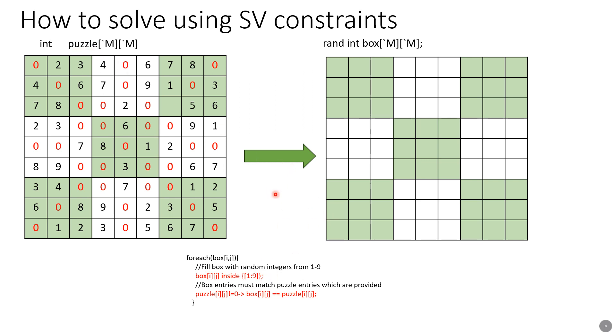We call that random two-dimensional matrix 'box' and the constants that were provided to us we call matrix 'puzzle'. Then we start writing constraints on how to constrain these elements using whatever is provided. We write two constraints. The first constraint says box[i][j] inside 1 to 9, meaning we're going to fill each of these small boxes using numbers 1 to 9. The next says puzzle[i][j] not equal to zero implies box[i][j] equals puzzle[i][j]. That means if any element is not zero, the numbers that have been provided in the puzzle matrix just need to be copied over to the box matrix.